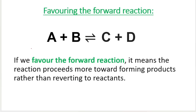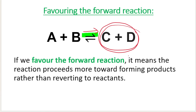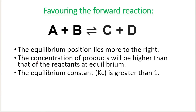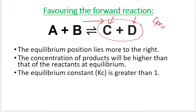If I tell you that we are favoring the forward reaction, what that means is that we have a reaction that proceeds more towards forming products rather than forming reactants. So if we favor the forward reaction, it's going to make more of C plus D by using A plus B. Favoring the forward reaction means that the equilibrium position lies more to the right, because the forward reaction is pointing to the right. More products are being produced, and we end up producing more C and more D.